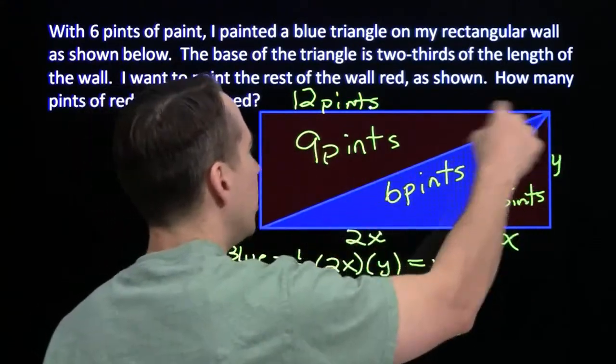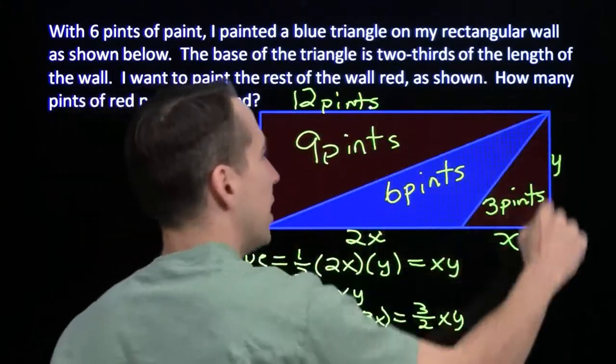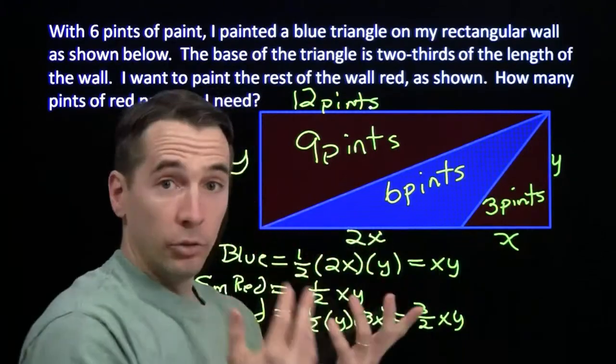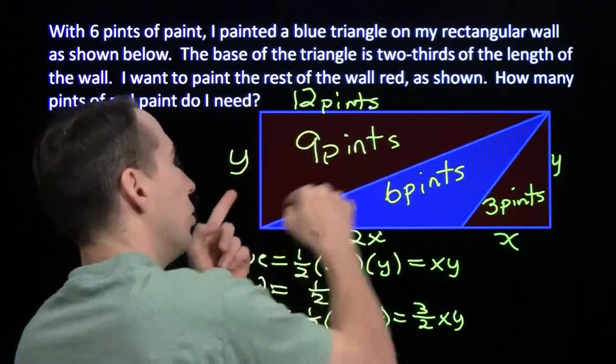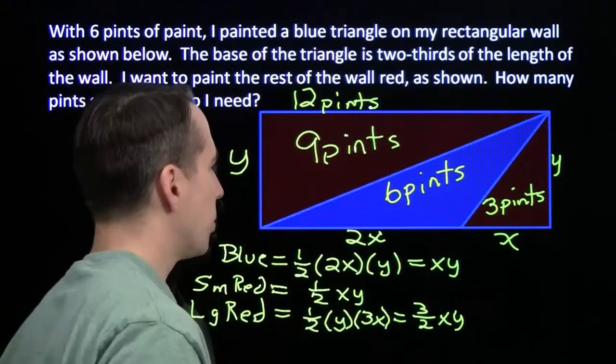And then this triangle up here is the same as these two triangles put together. We have a rectangle divided by a diagonal. This whole triangle in total requires 9 pints. So we know that this whole triangle will also require 9 pints. So we didn't need all that algebra at all.